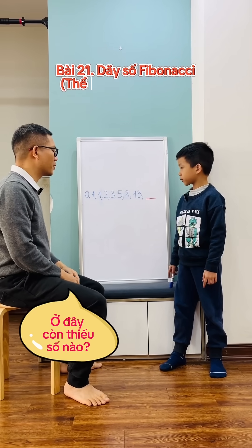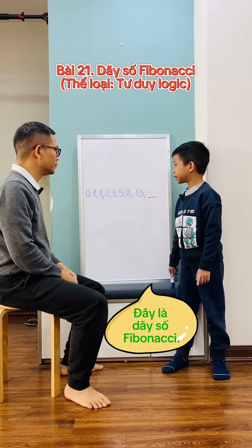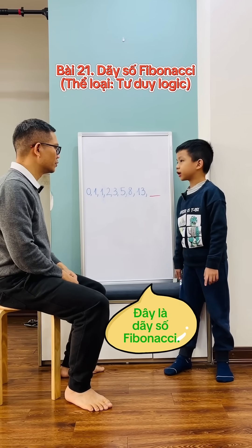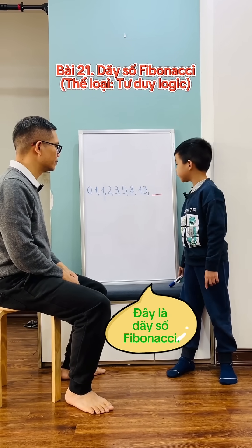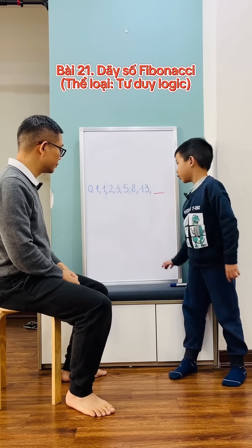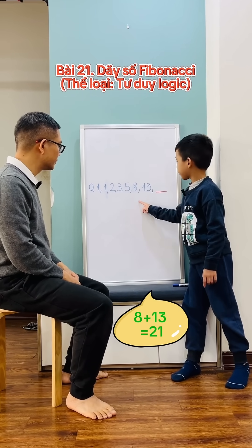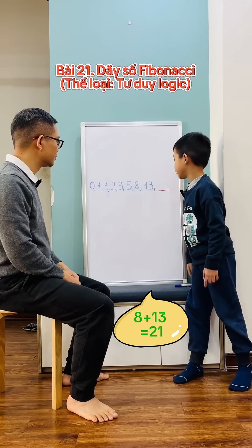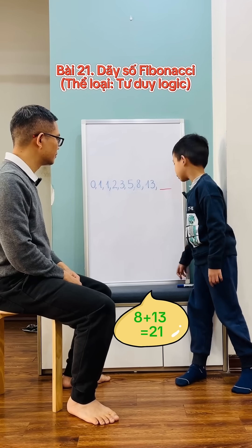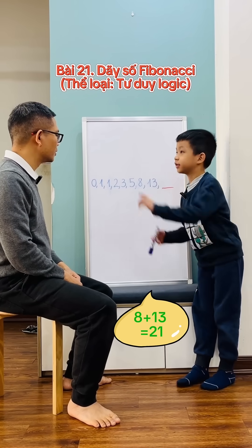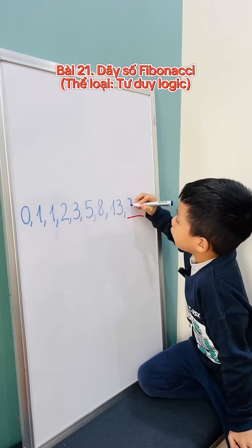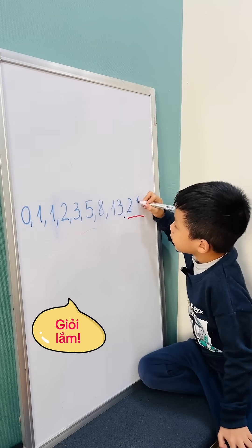So what is the missing number? This is the Fibonacci sequence. So 8 plus 13 equals 21. Well done.